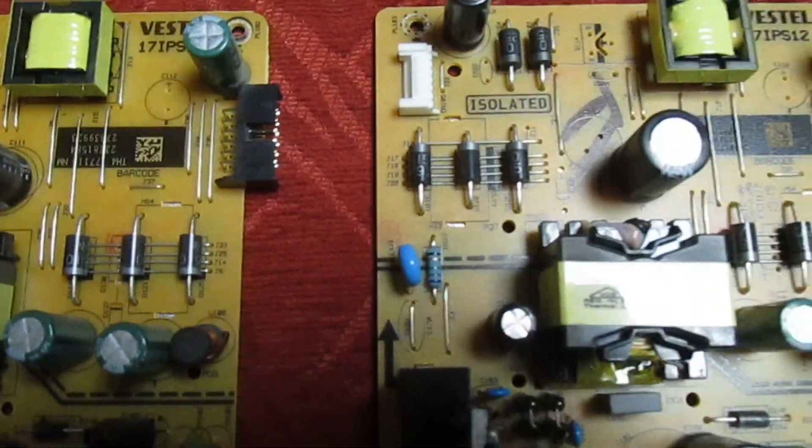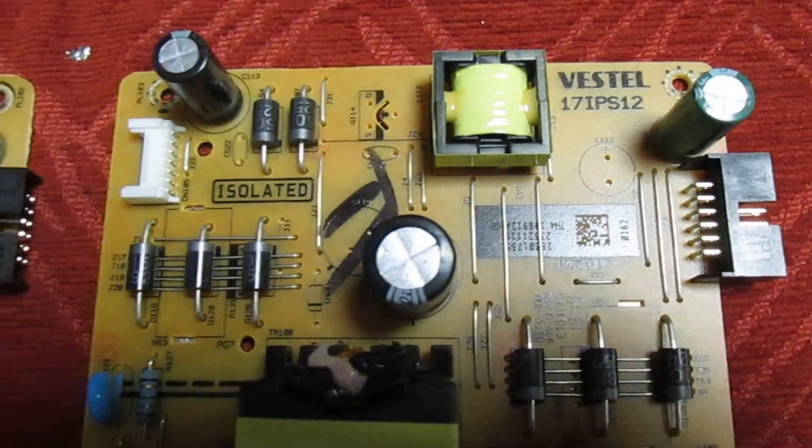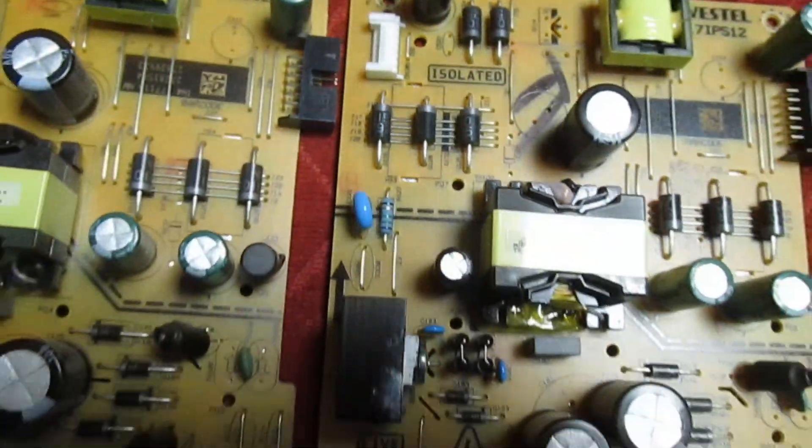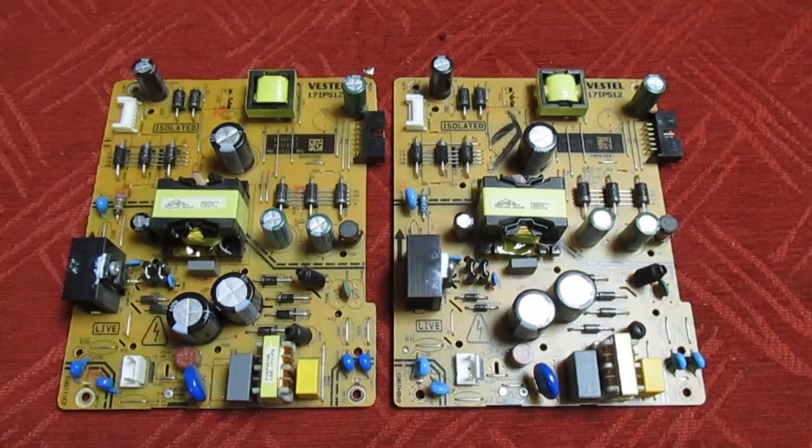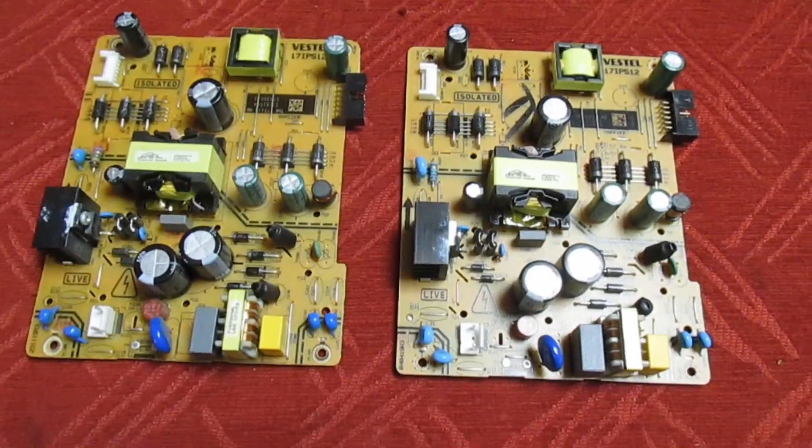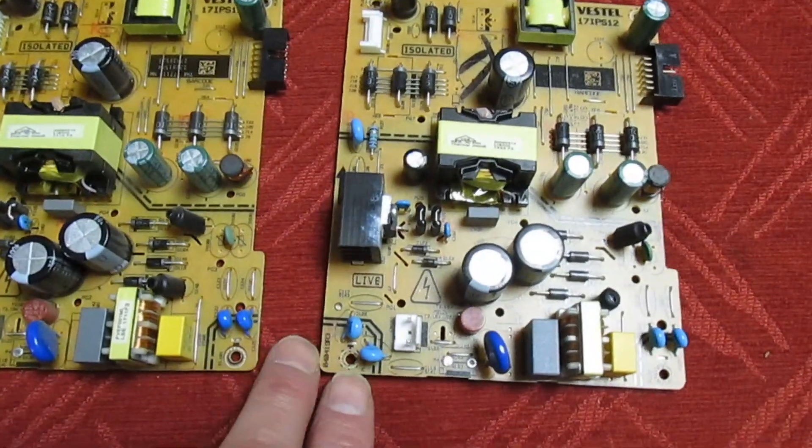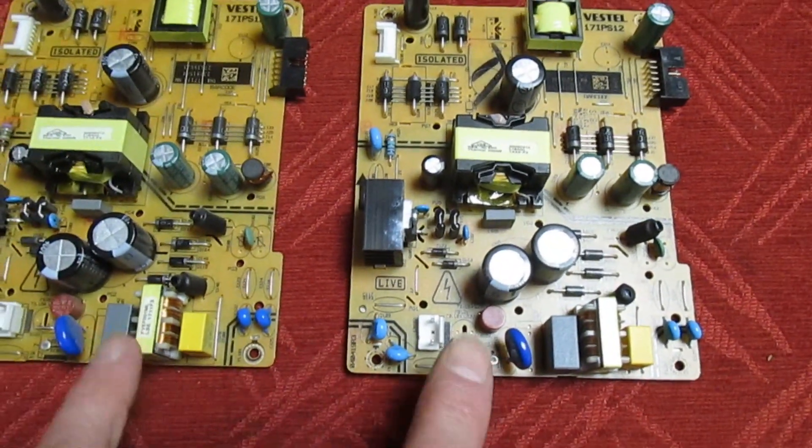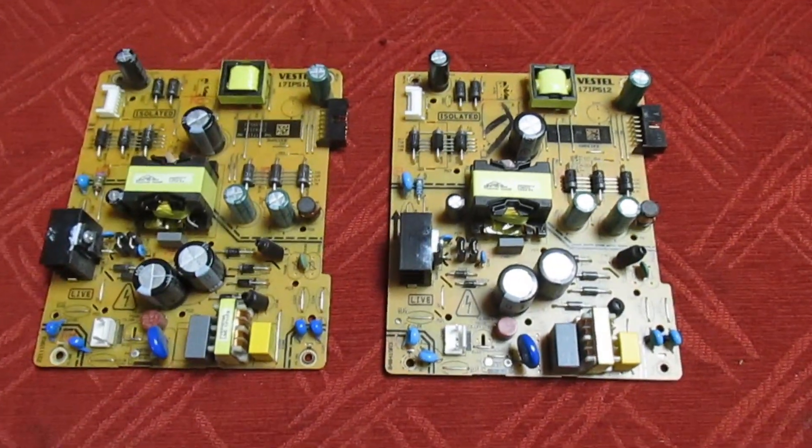So if we look at these two Vestel power supplies side by side, they're both 17 IPS 12. If you look at them, they look absolutely identical. So what's the difference between these two power supplies that look identical and why these two are not interchangeable?